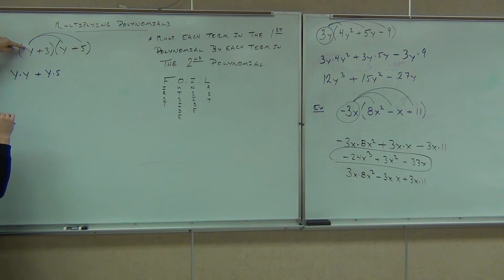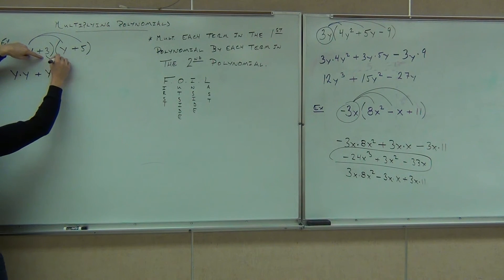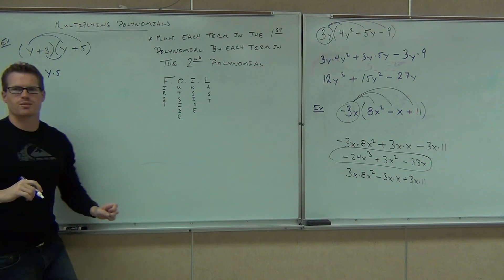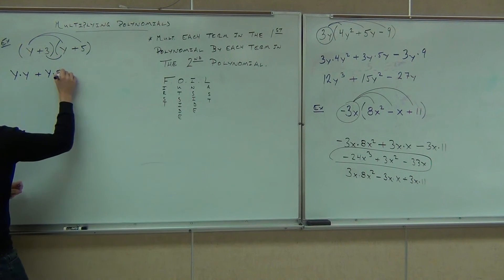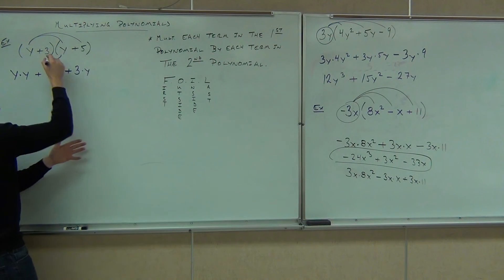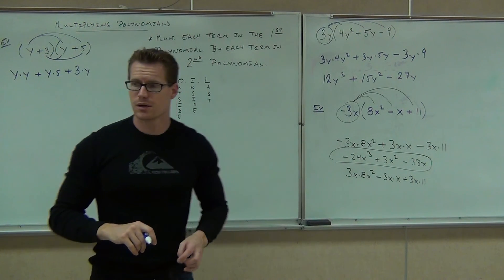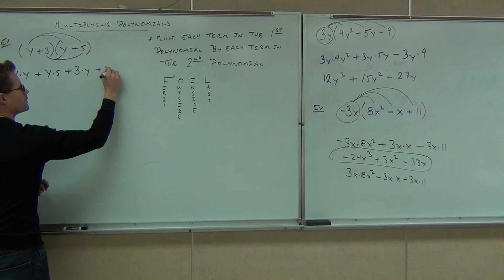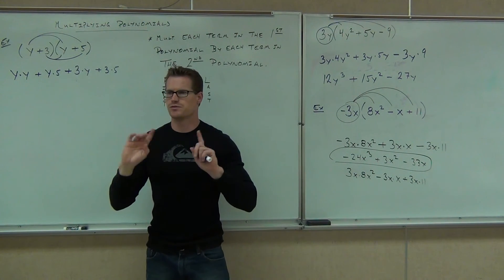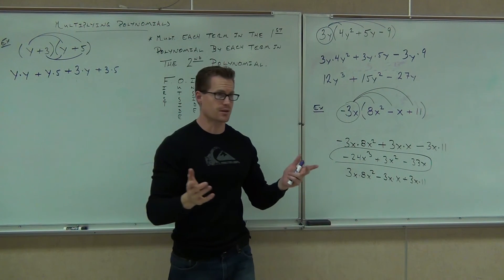I've only done this first term times these two. Now I've got to switch to the 3. So Y times Y, Y times 5 — I've got those. Now 3 times Y — the inside ones. Positive times a positive means a plus: plus 3 times Y. And lastly I've got the 3 times the 5 — plus 3 times 5. That's all four combinations — every combination of terms.